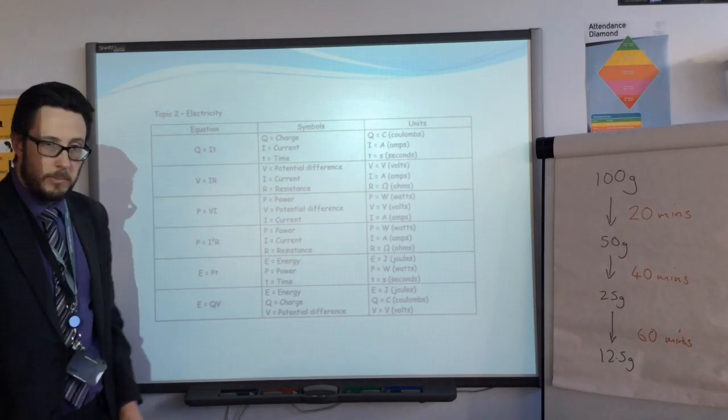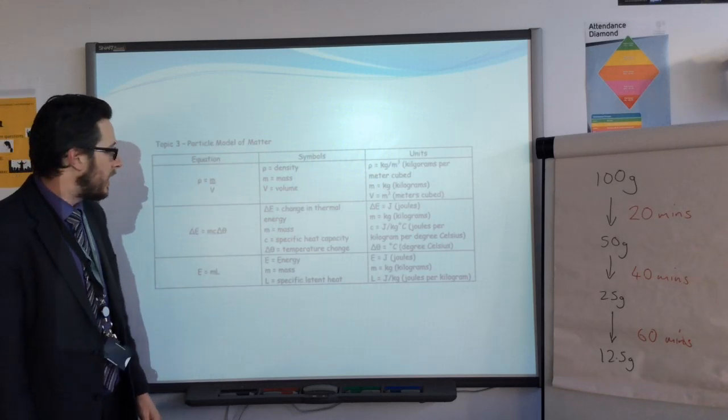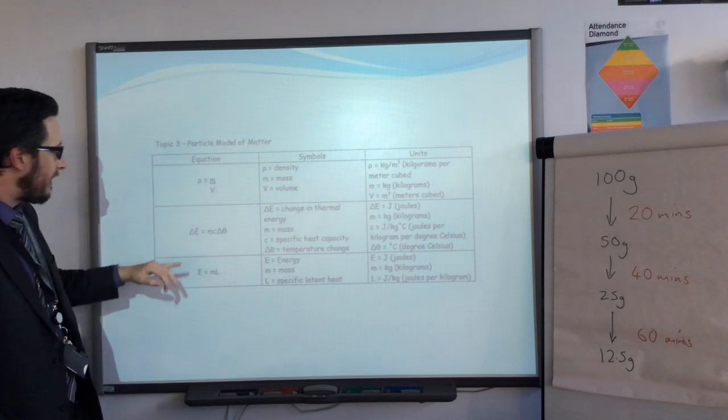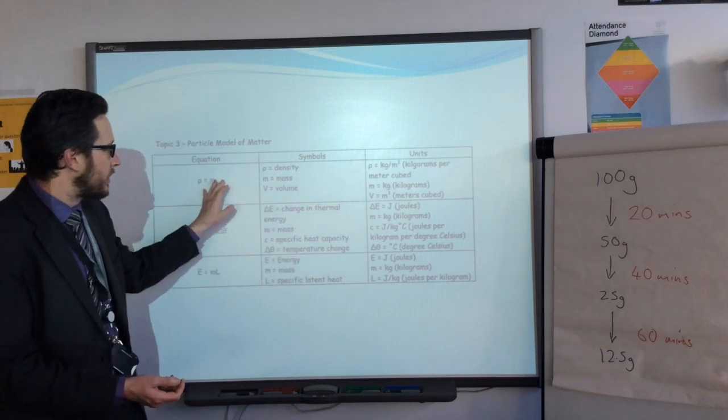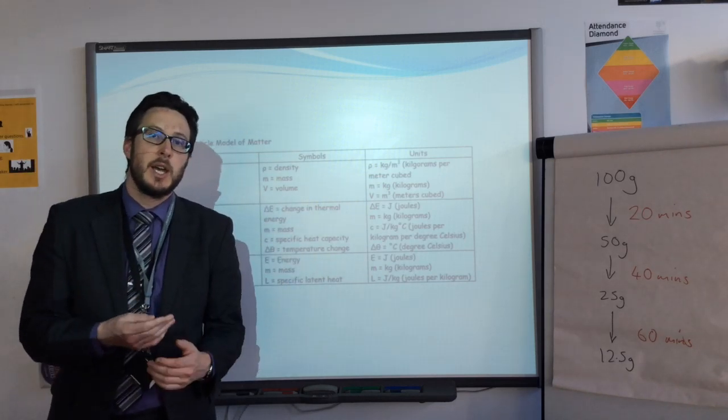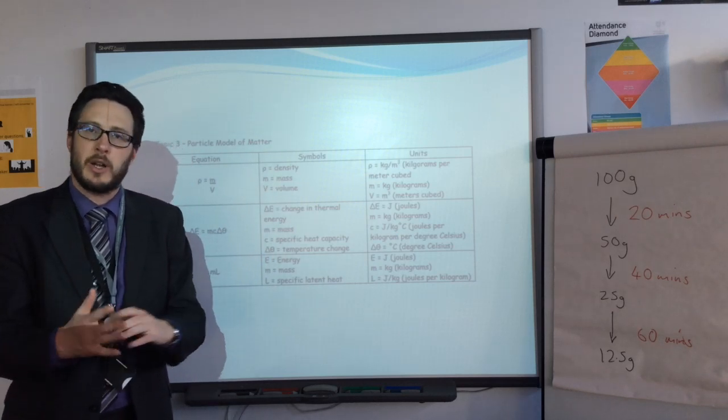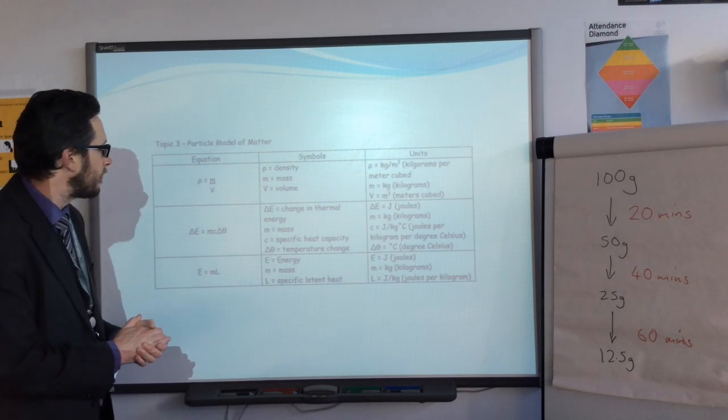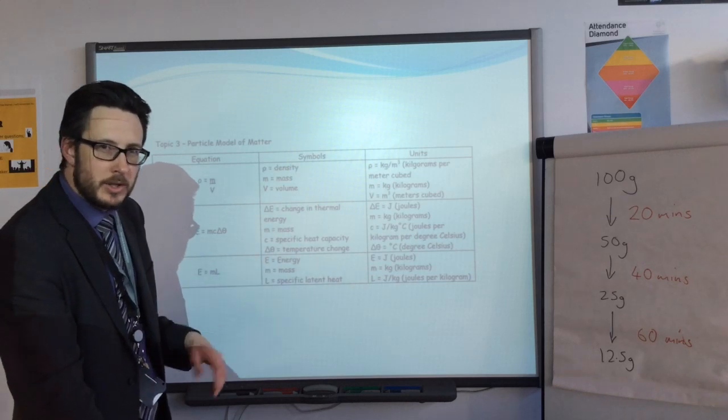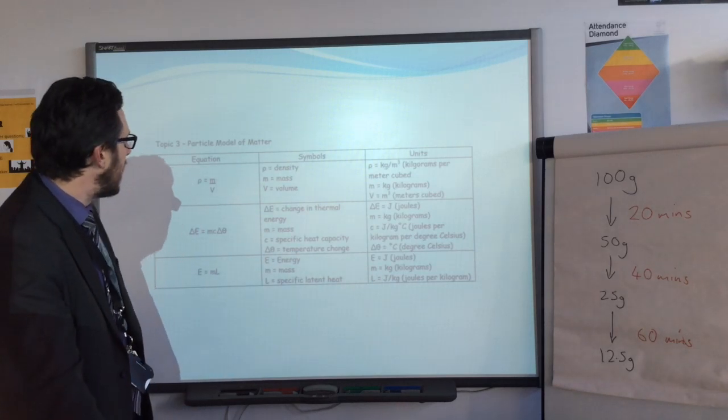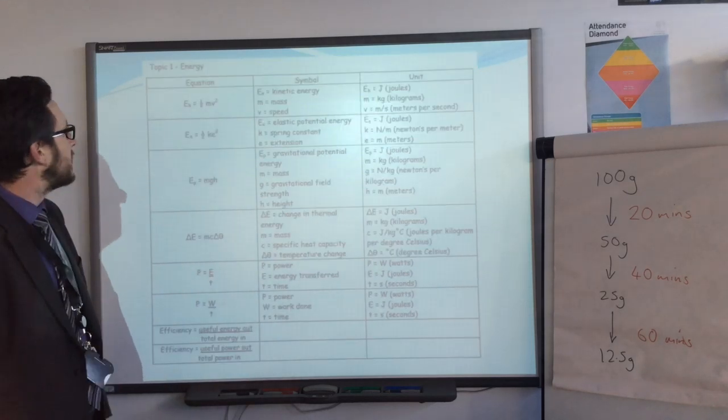And you've got these equations for the particle model of matter, which I haven't gone into too much today, talking about latent heat, density, things such as that. So density was the sixth mark required practical question last year. Now that's not to say it shouldn't come up. And you may need to know the formula for working it out. But it's unlikely to be the big question, the big practical question. So that's the particle model of matter. There's not equations for the atomic radiation unit. You've got these for electricity. And you've got these for energy. Quite a lot there.